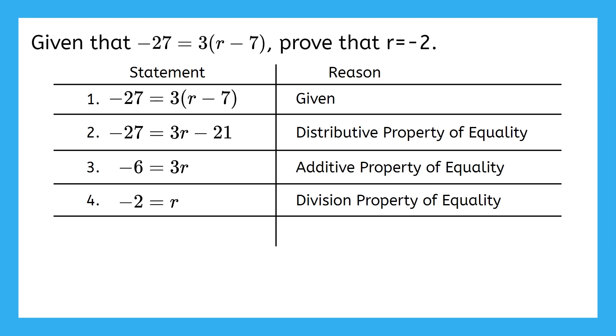Huh. I'm kind of done solving my equation, but this is not what I was told to prove. My last statement needs to match what I was told to prove exactly. So my next statement needs to be flipped around to r equals negative 2.